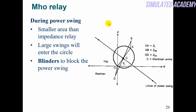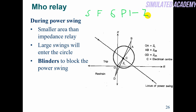Regarding power swings — we have discussed earlier what a power swing is. If switching or a fault occurs, the power will change, the current will change, the Z value will change, and a point moves from zero toward the center of the impedance diagram.